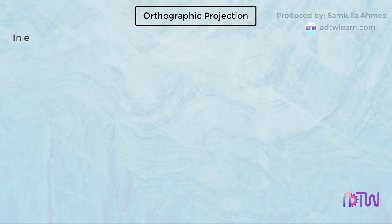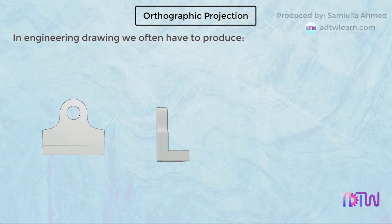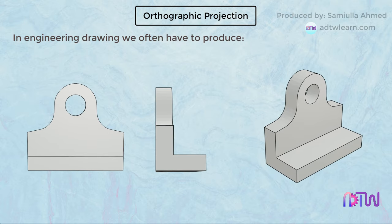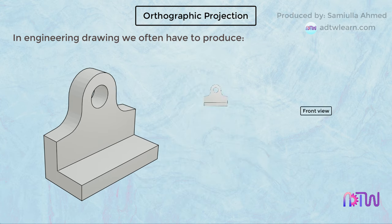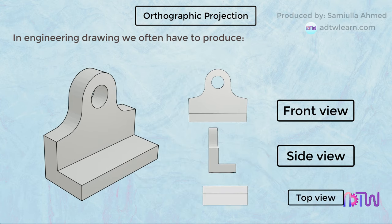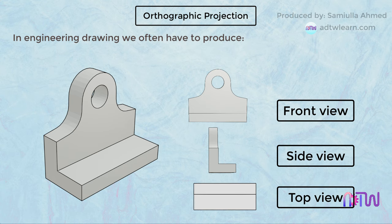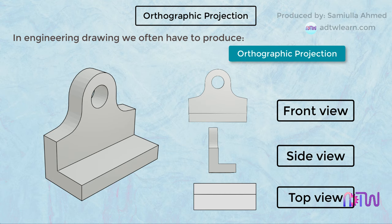In engineering drawing, we often have to produce 2D and 3D drawings of parts or components. These 3D objects need to be shown on 2D planes — that is, X and Y planes — in such a way that we get to see all the views: front view, side view, top view, etc. This projection system is known as orthographic projection, and in this system the views have to be drawn following certain standard projection rules.